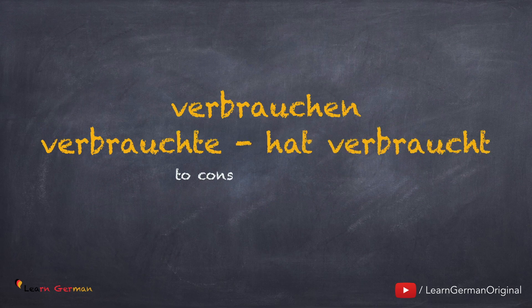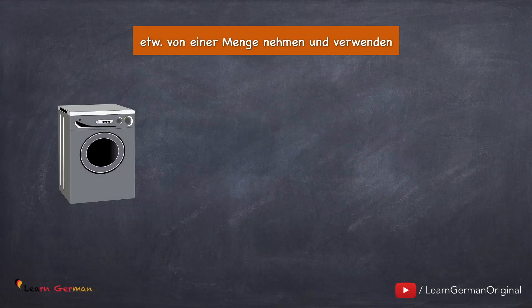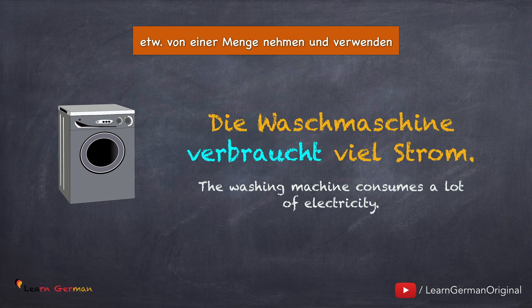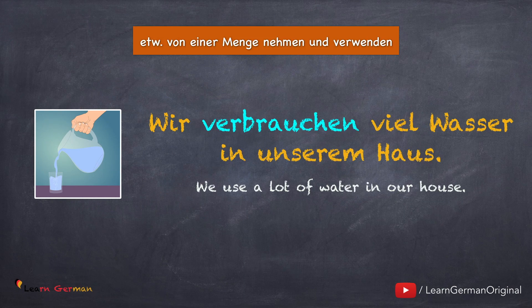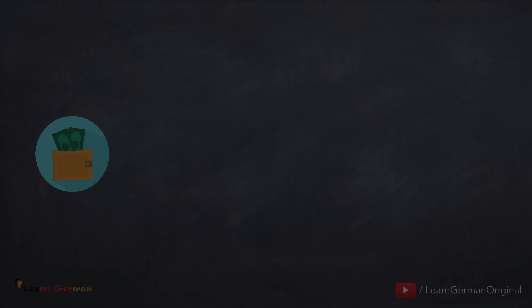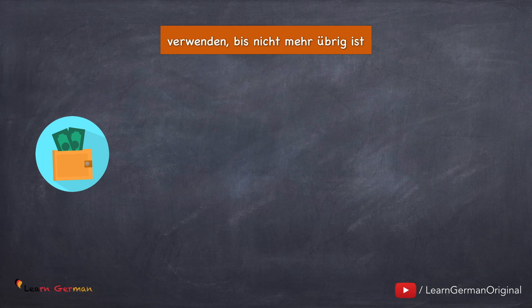Nun kommen wir zu dem dritten Verb: Verbrauchen, verbrauchte, hat verbraucht. Wir schauen uns jetzt viele Kontexte an, wo man das Verb verbrauchen benutzen kann. Die erste Bedeutung ist, wenn man etwas von einer Menge nimmt und verwendet. Die Waschmaschine verbraucht viel Strom. Das nächste Beispiel: Wir verbrauchen viel Wasser in unserem Haus — es gibt eine große Menge von Wasser, wir nehmen davon eine Menge und verwenden es. Man kann auch Energie, Gas, Öl oder Treibstoff verbrauchen. Die nächste Bedeutung ist etwas verwenden, bis nichts mehr übrig ist.